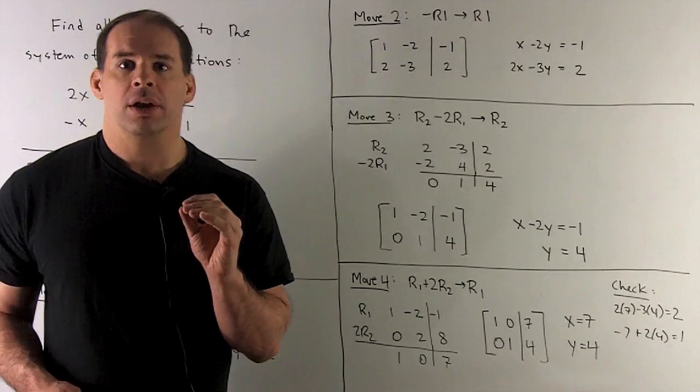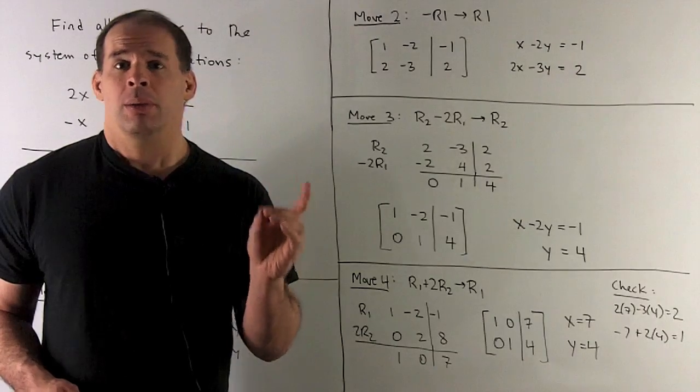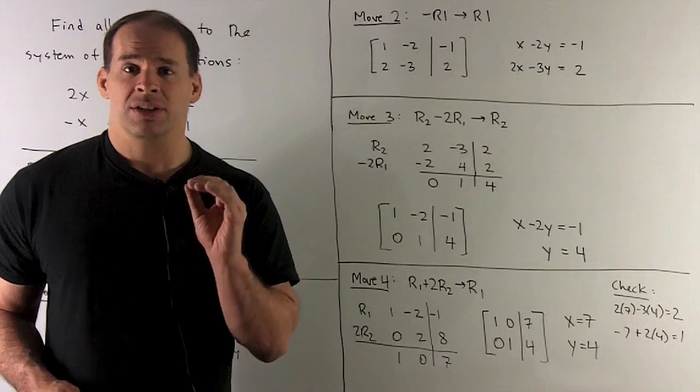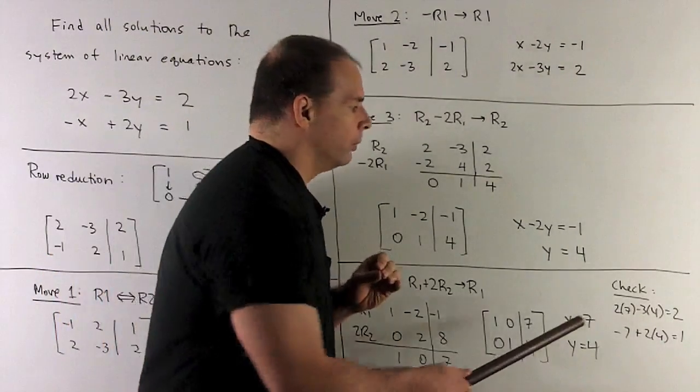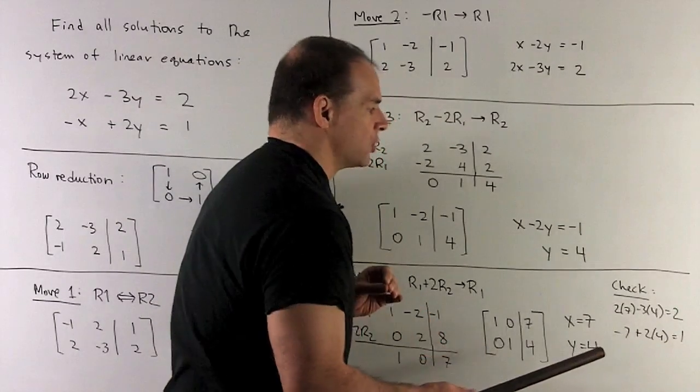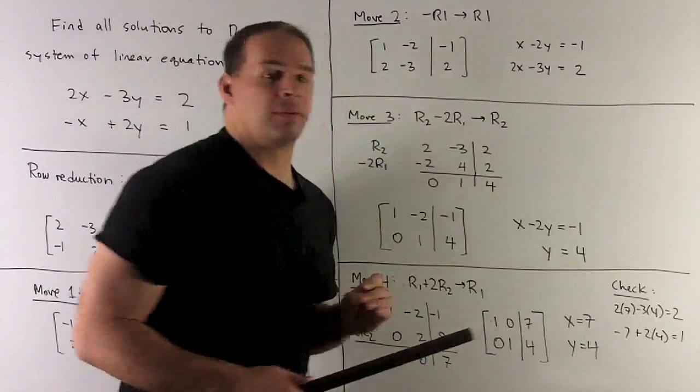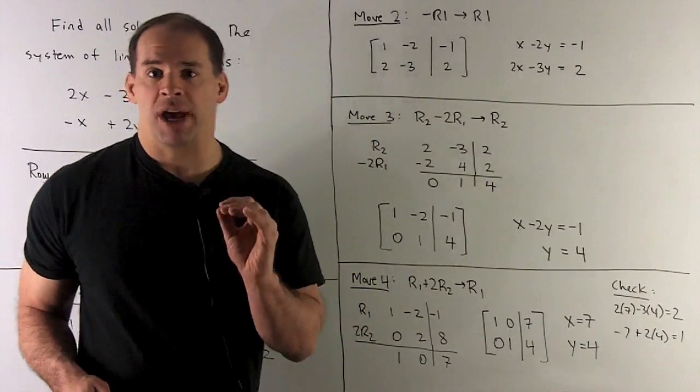Now, we always check our work. So I take that solution, put it back in the original equations, see if it works out. Now, when I do that, we'll note, we'll have a 2 coming out from the first equation, a 1 coming out from our second equation, so our check works.